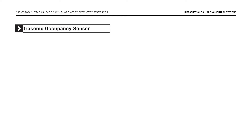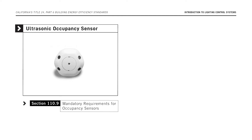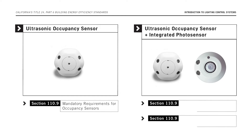For example, if an ultrasonic occupancy sensor is installed to comply with the shut-off control requirements in the Energy Code, then it also must comply with the specific device requirements in Section 110.9. If that same device contains an integrated photo sensor to serve as part of a daylighting control system, then it also needs to comply with requirements for a daylighting control contained in Section 110.9.